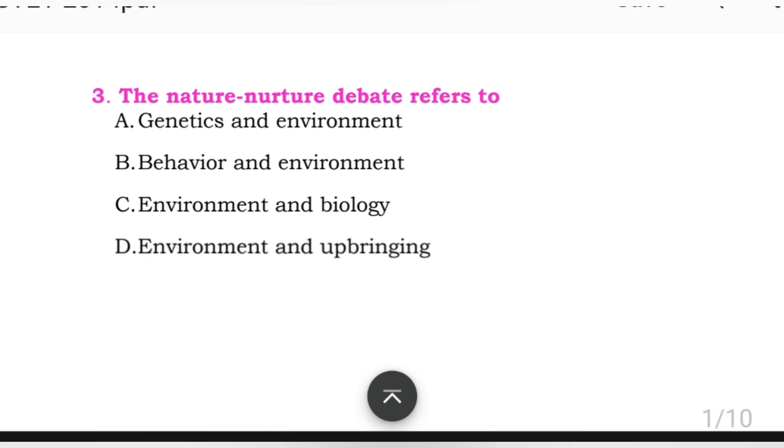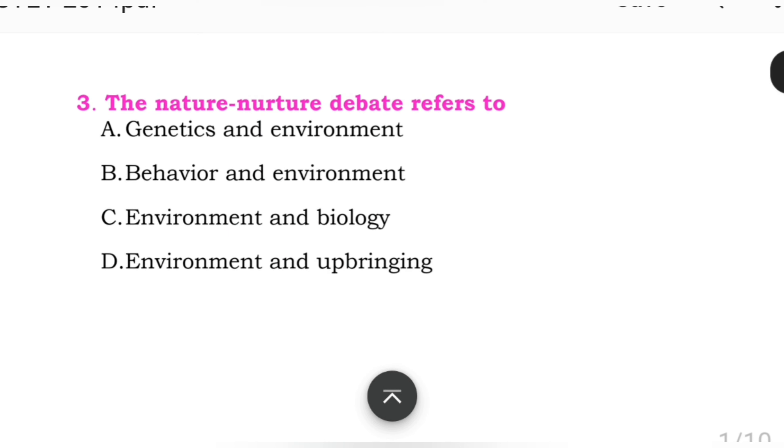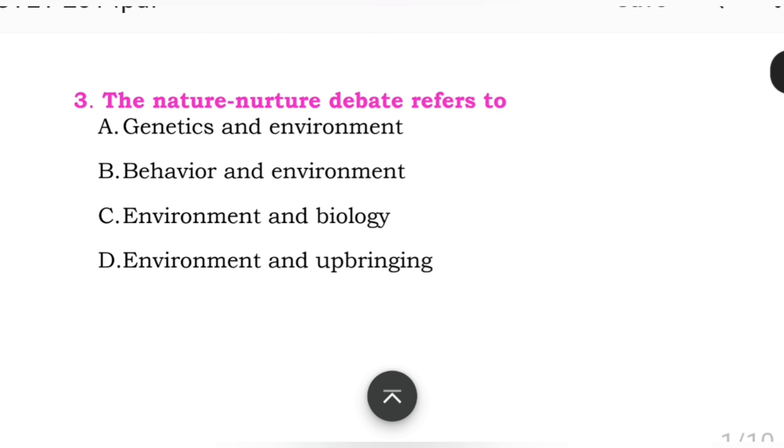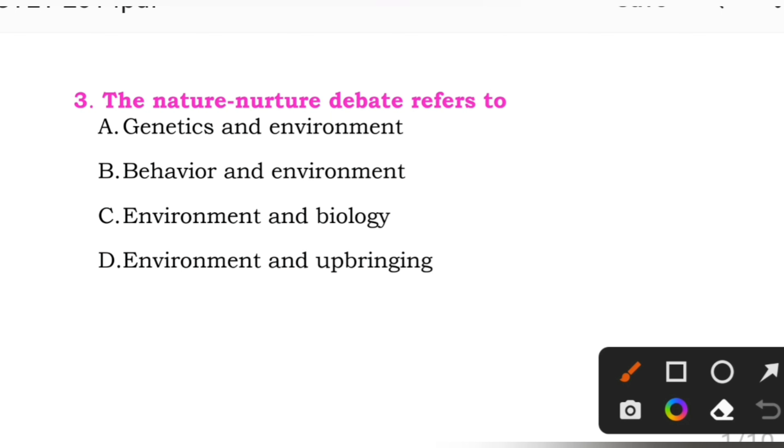Question number three: The nature-nurture debate refers to. Options: A: genetics and environment. B: behavior and environment. C: environment and biology. D: environment and upbringing. The right answer is A, genetics and environment.